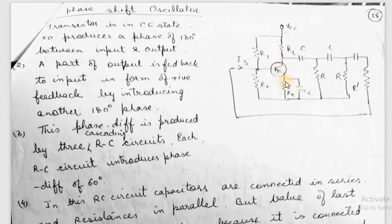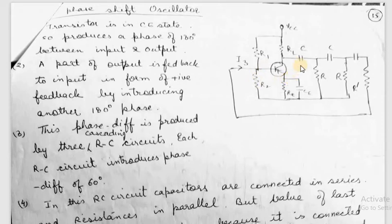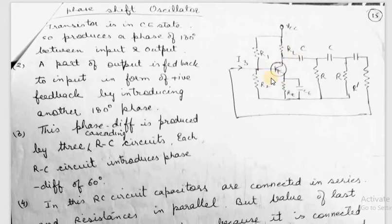As seen from the diagram, the transistor has been connected in the common emitter configuration so that it amplifies any input signal provided to it. All these resistors, along with the battery power supply, provide the DC operating point. You can also see from the diagram that there are three combinations of RC, and these three RC combinations behave as a feedback network that provides the necessary feedback to the amplifier circuit. As a whole, this amplification stage and this feedback stage combined behave as an oscillator. This is the basic phase shift oscillator.